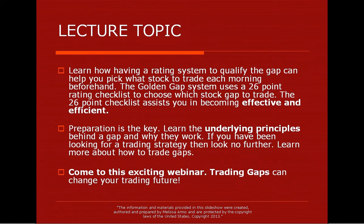Learn how having a rating system can help you. This is what I use to trade — a rating system to qualify the gap, and it can help you pick what stock to trade each morning beforehand, meaning before 9:30 a.m., before the stock market opens. The Golden Gap System uses a 26-point rating checklist to choose which stock gap to trade. The 26-point checklist assists you in becoming effective and efficient in trading.